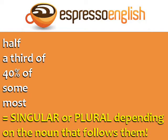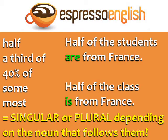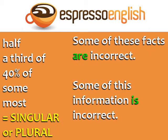Here's the tricky part. Half, a third of, 40% of, some, and most can be singular or plural depending on the noun that follows them. For example: 'half of the students are from France' — we use the plural verb 'are' because 'students' is plural. 'Half of the class is from France' — we use the singular verb 'is' because 'class' is singular. 'Some of these facts are incorrect' — facts is plural, so we use 'are.' 'Some of this information is incorrect' — information is uncountable, so it's always singular, and we use 'is.'